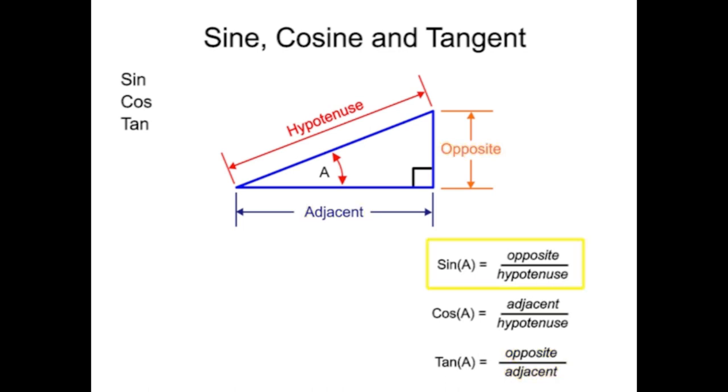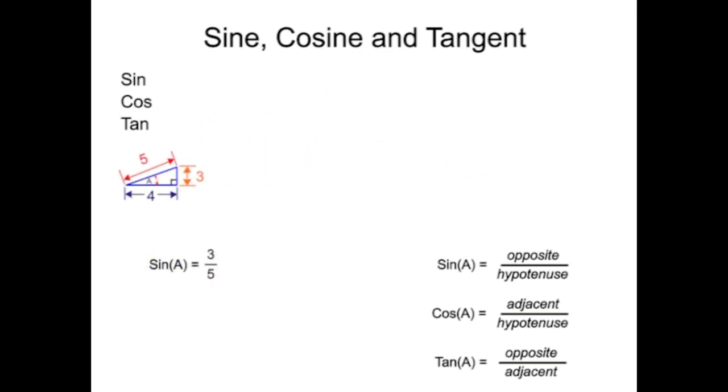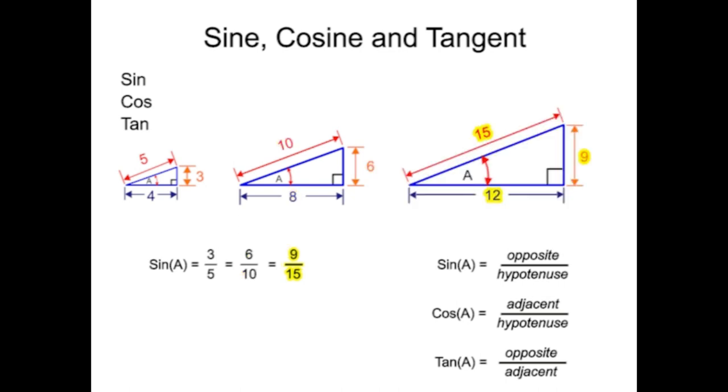Since the sine, cosine, and tangent functions are ratios, the actual length of the sides can vary and produce similar angles. For instance, in this triangle, the sine of angle A is equal to three-fifths. If we doubled or even tripled the size of the triangle, the ratio would still simplify down to three-fifths. Since the value of the ratio is the same for a given angle regardless of the size of the triangle, these functions are easily determined with a calculator.